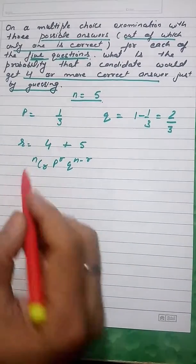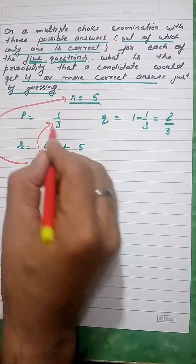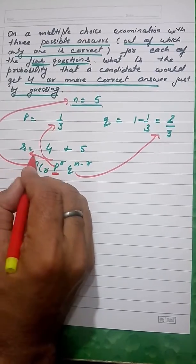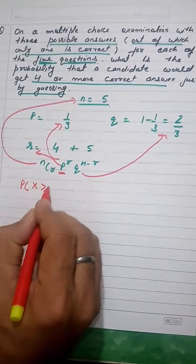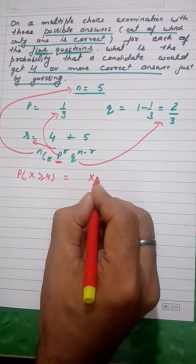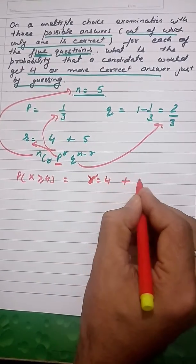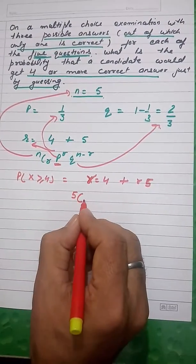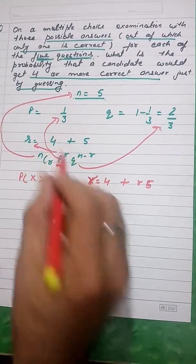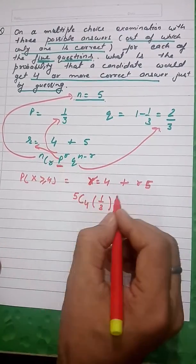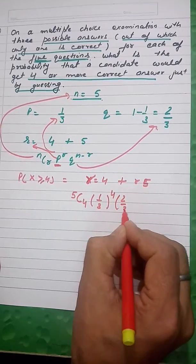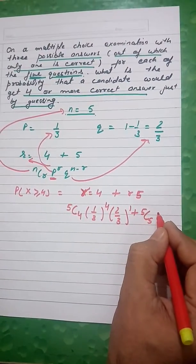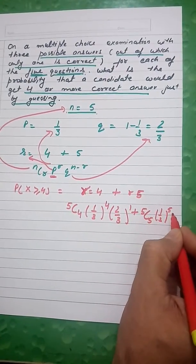Using the formula nCr · p^r · q^(n-r), the probability P(X ≥ 4) equals the case for r=4 plus the case for r=5. So we compute: 5C4 · (1/3)^4 · (2/3)^1 plus 5C5 · (1/3)^5 · (2/3)^0.